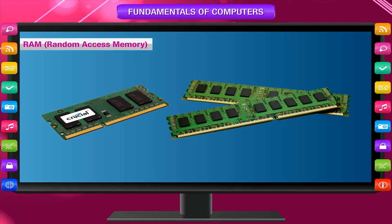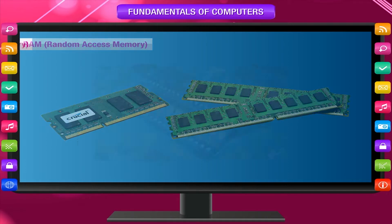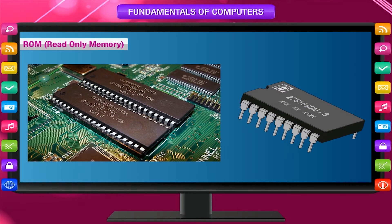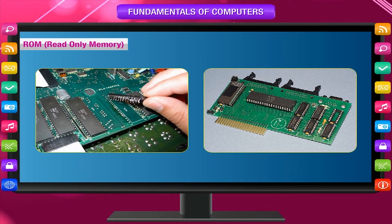Its contents are lost when the computer is switched off, so RAM is a volatile or temporary memory. ROM, or Read-Only Memory, stores startup instructions for booting the computer system. The ROM can only be read from and not written onto. Information is permanently stored on ROM and cannot be changed. The contents are not lost when you turn off the computer, so it is a non-volatile memory.